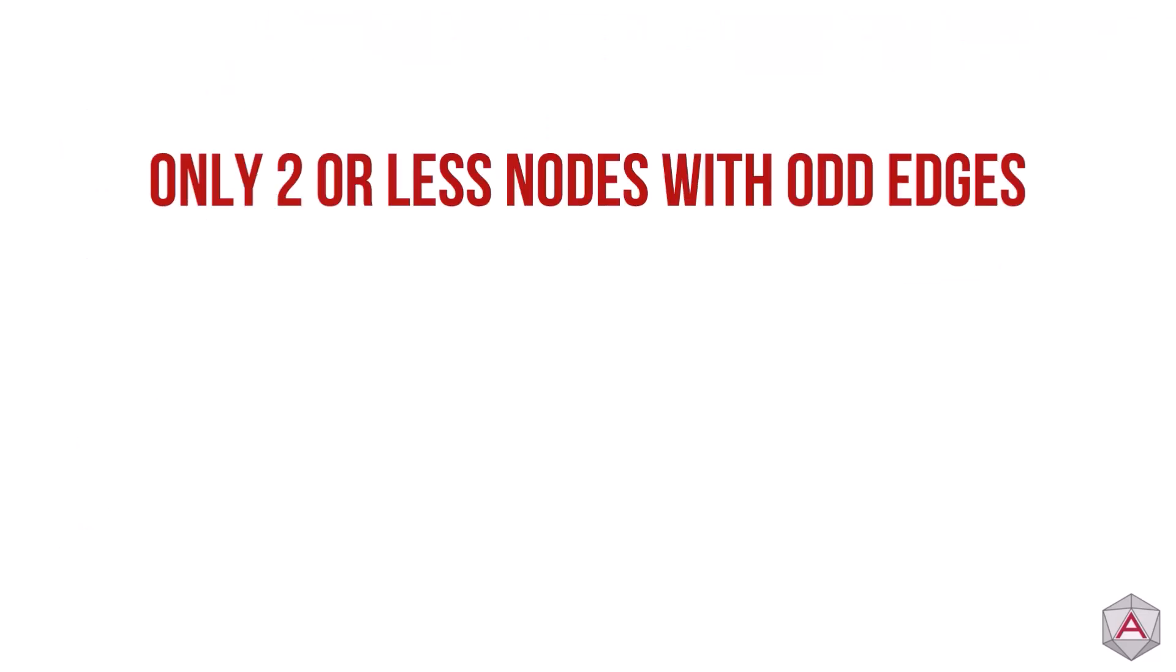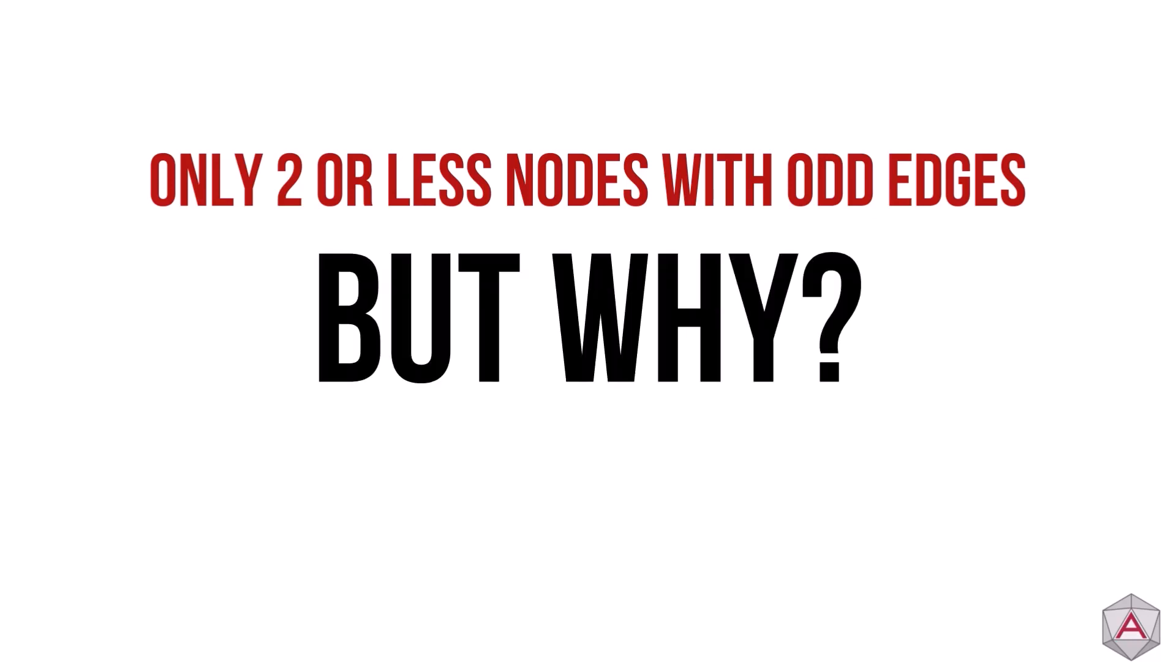In fact, the official rule is that graphs with an Euler path can only have two or fewer nodes with odd edges. But why is that the case?